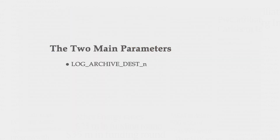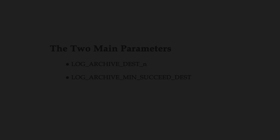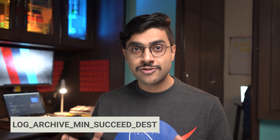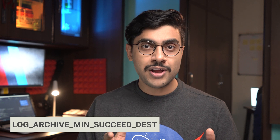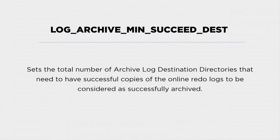Though we have successfully created archive log destination directory, we are not done yet. Remember, at the beginning of the video I said there are two main parameters that we need to configure: LOG_ARCHIVE_DEST_N and LOG_ARCHIVE_MIN_SUCCEED_DEST. The second parameter, LOG_ARCHIVE_MIN_SUCCEED_DEST, is still untouched. This parameter sets the total number of archive log destination directories that need to have successful copies of the online redo logs to be considered as successfully archived.